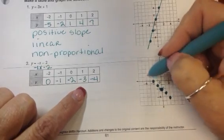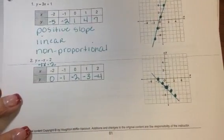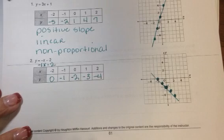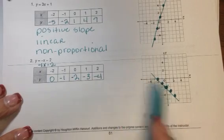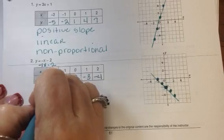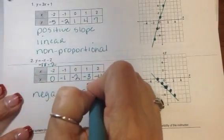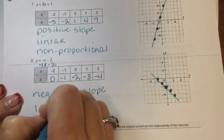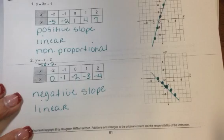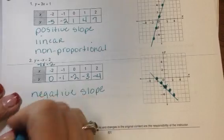Now I'm going to draw a line through the points. This is a negative slope because left to right it is going downhill. It's a straight line, so it is linear. And it is not going through the origin, so it is non-proportional.